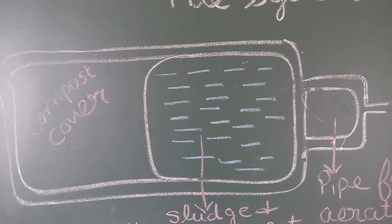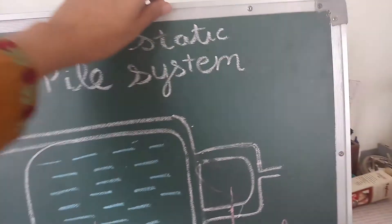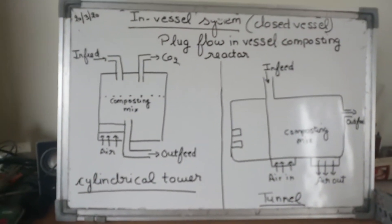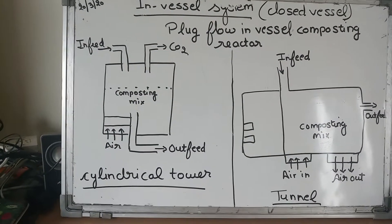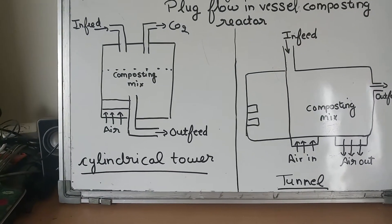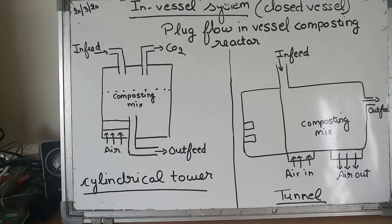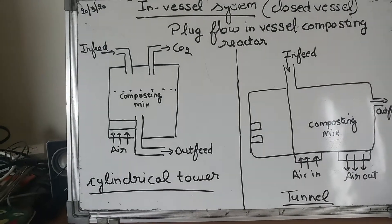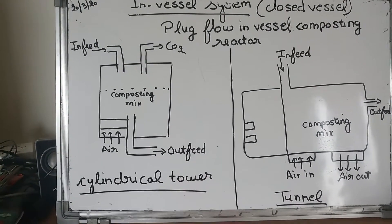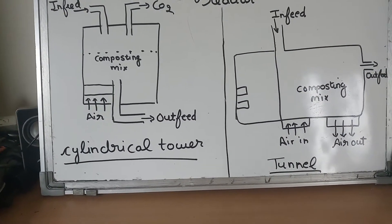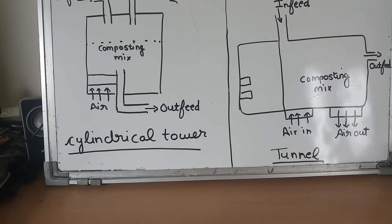The second type is the in-vessel system, also called a closed system. In the in-vessel system, the composting process is carried out in a closed vessel or container. This is an advanced method designed to control environmental conditions — specifically temperature, airflow, and oxygen supply.